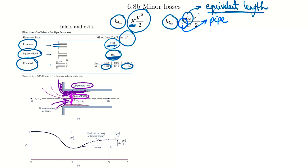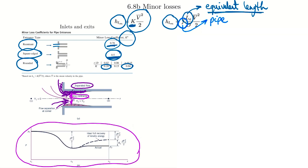For gradual contractions, a table of loss coefficients shows that for very sharp edges (theta equals 180 degrees) you get those sharp-edged contractions, but going all the way down to only 10 degrees — very gradual — the K drops dramatically to only about 0.05. You might wonder why not always do it gradually. The answer is cost and space: gradual changes are harder to manufacture and more expensive, and you might not have the space to install them before a bend or another fitting comes up.